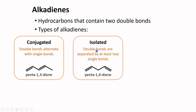The next type of alkadienes is isolated alkadienes. It involves double bonds that are separated by at least two single bonds, such as in this example. The name of this compound is penta-1,4-diene.